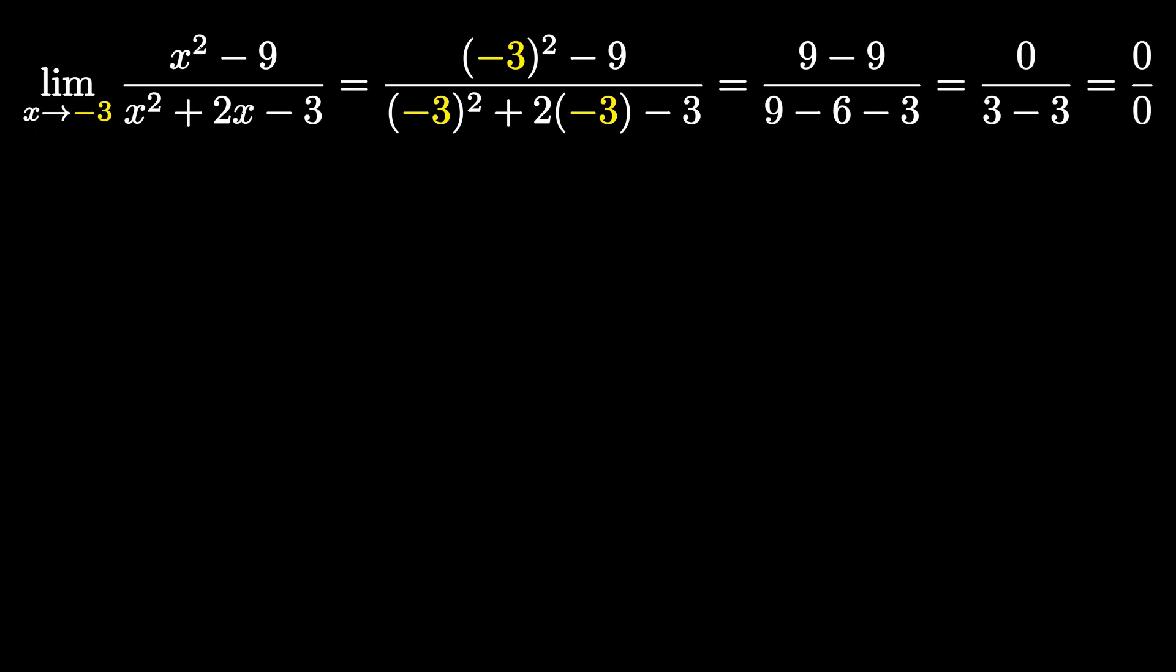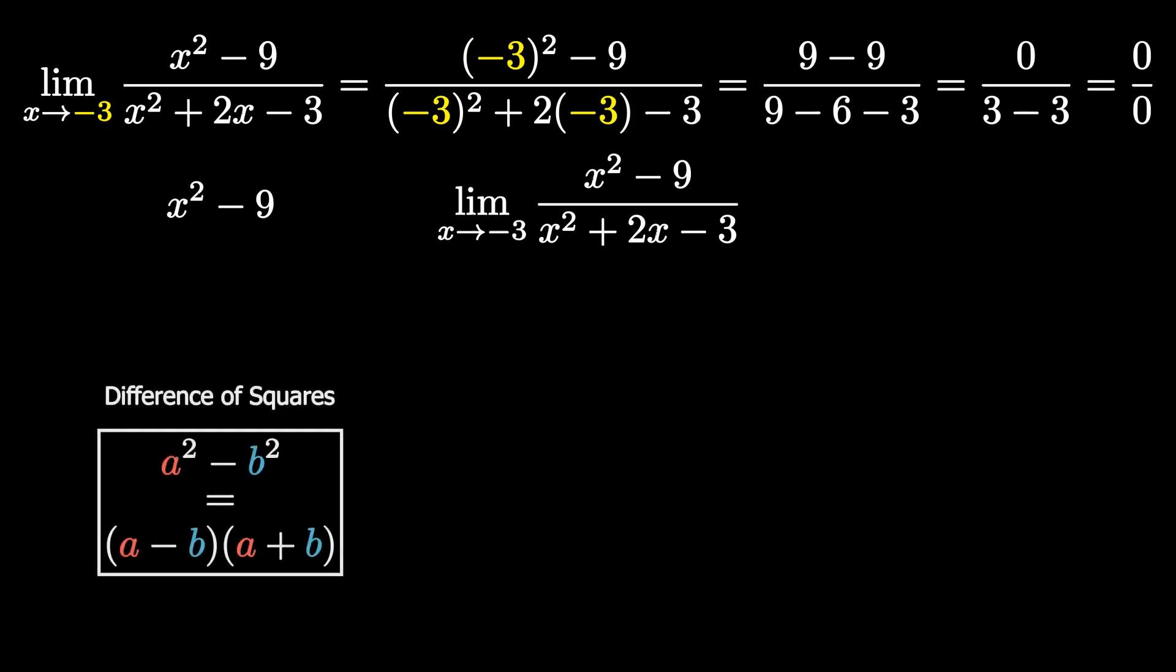So to identify what the holes are of our function, what we are going to do is we are going to factor both the top and bottom of our function. So starting with the top, we have x squared minus 9. So this is what we call a difference of squares, and it's in the name. A difference of squares is basically the difference of two perfect squares, and there is a formula that you can use.